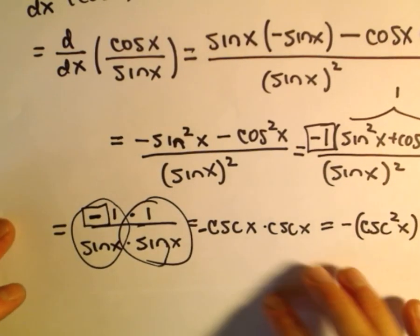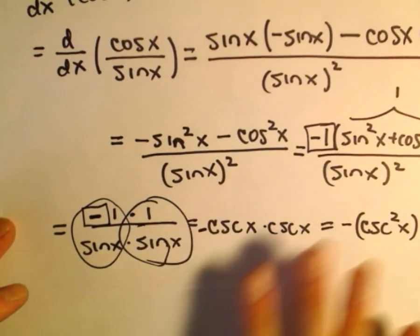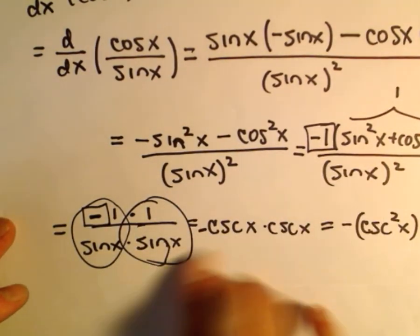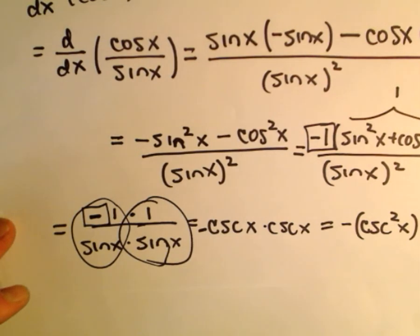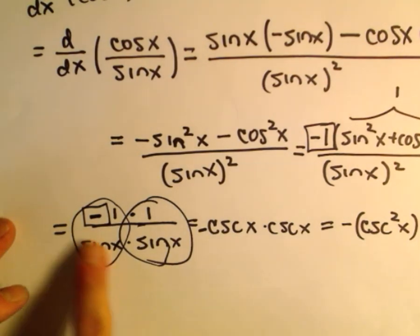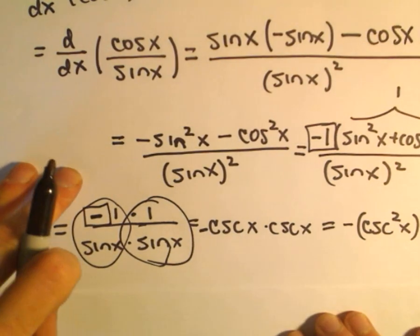Nothing too crazy — it's just using the quotient rule and being careful with your algebra. Don't forget things like the negative sign, as I almost did. Let's justify the other two really quickly.